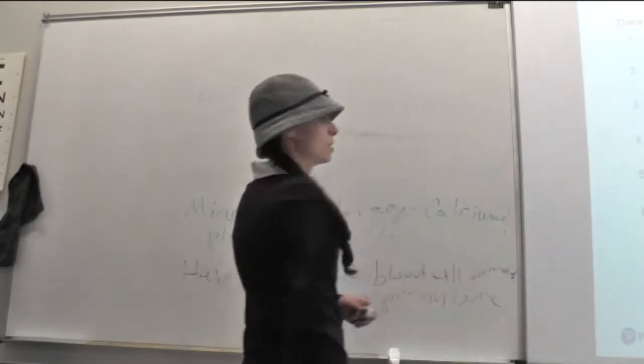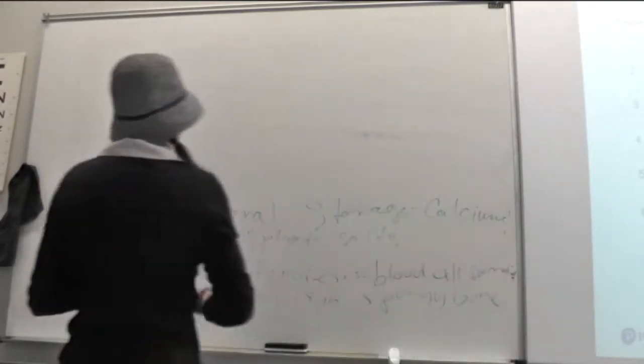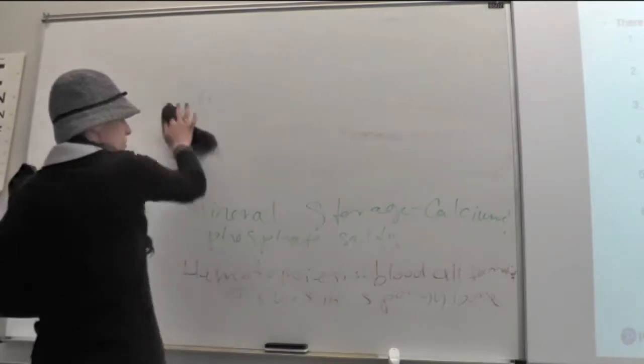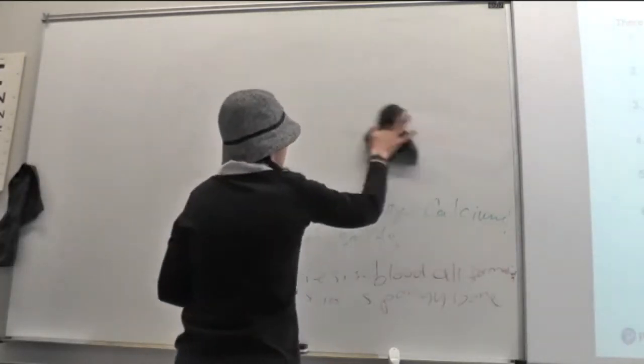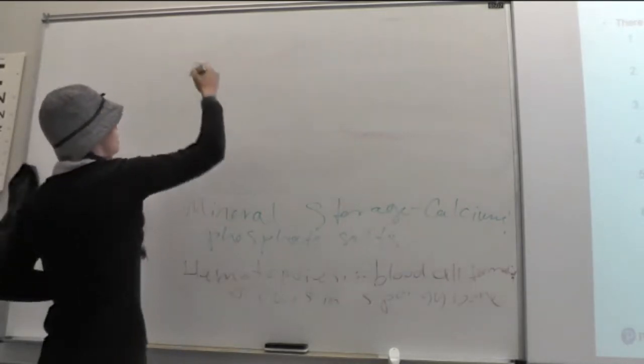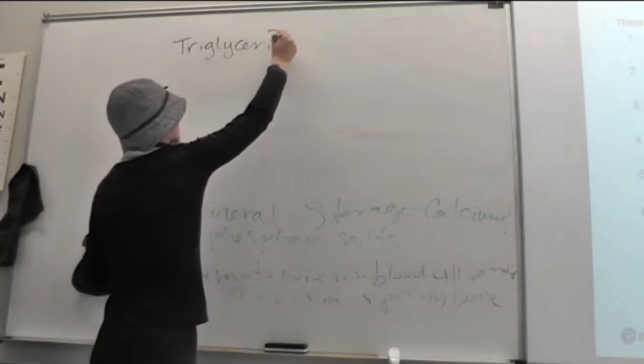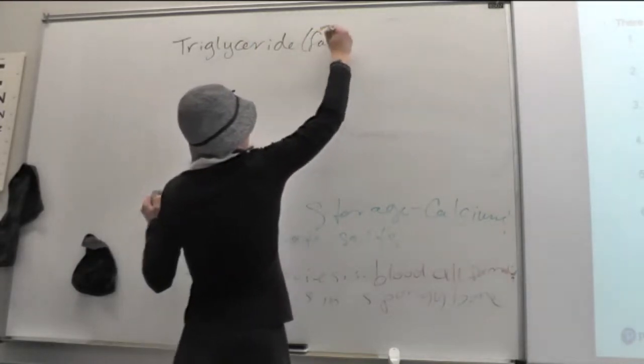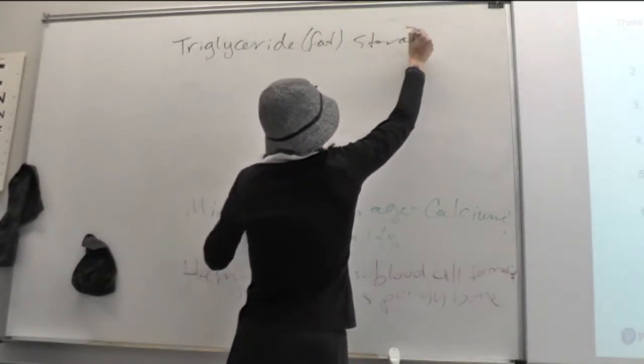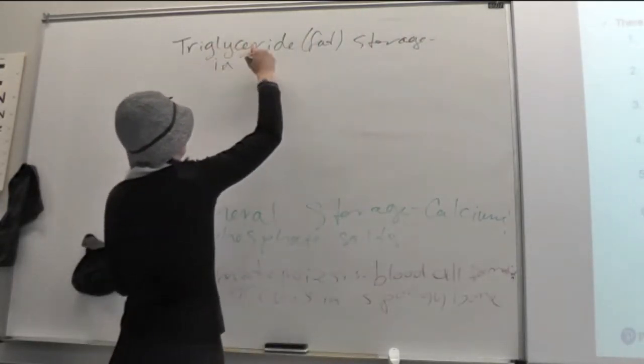So, we'll look more at that. A kind of a weird thing is that it's also a site of triglyceride storage. But only in adults and only in this one part called yellow marrow. So, for another function, we can say triglyceride storage. Triglycerides are fats. And we can say that this happens in yellow marrow.